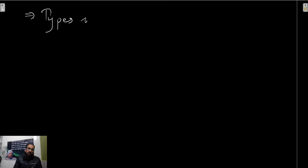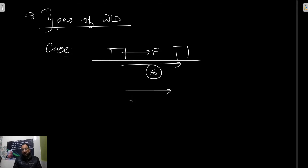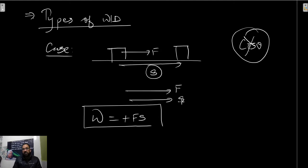Now you have types of work done. Case one: if the object is there and you apply a force, and the object gets displaced in the direction of the applied force - that is, force and displacement are in the same direction - then work done is said to be positive. Work done equals force multiplied by displacement. Note: we need cosine of angle for future study, but that is for 10th standard. For now, when force and displacement are in the same direction, positive work is done.